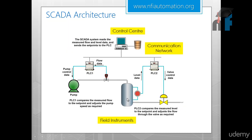Here is an example of SCADA architecture. We have a pump performing its own function, controlled by a PLC. There is also a tank with a level sensor providing information to another PLC, and a solenoid valve. One PLC controls the level; the other controls the speed of the pump. These independent PLCs are each used for their sole purpose in this process.